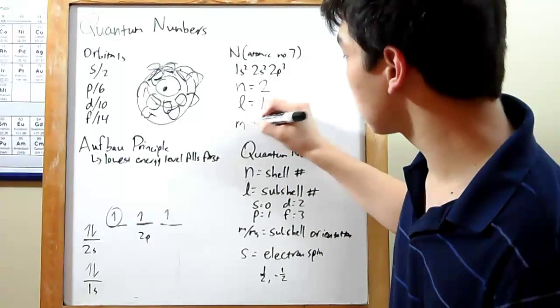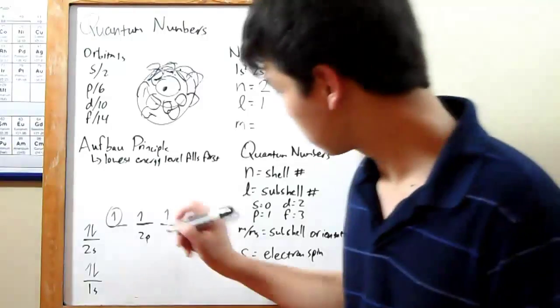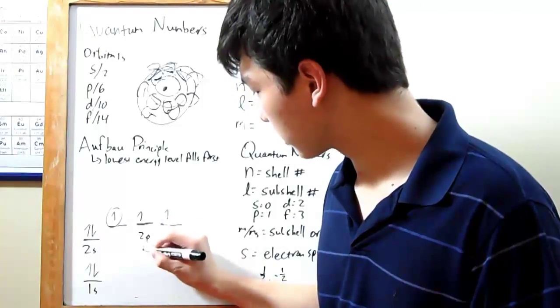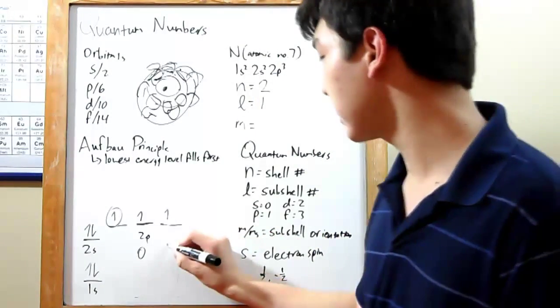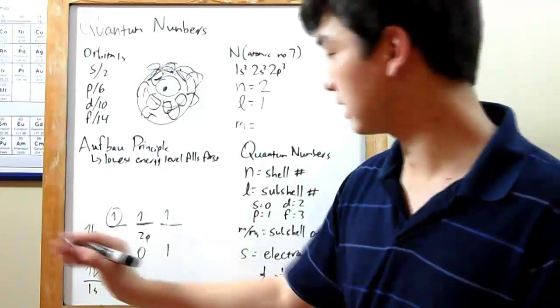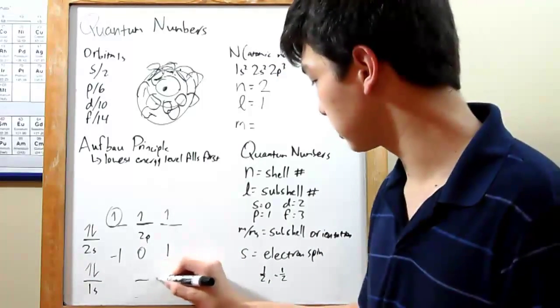Next is m. Sometimes written m sub l. That's your subshell orientation. How do you find this one? You come over here. Label your middle line 0. Every line you proceed to the right, add 1. Every line you proceed to the left, subtract 1.